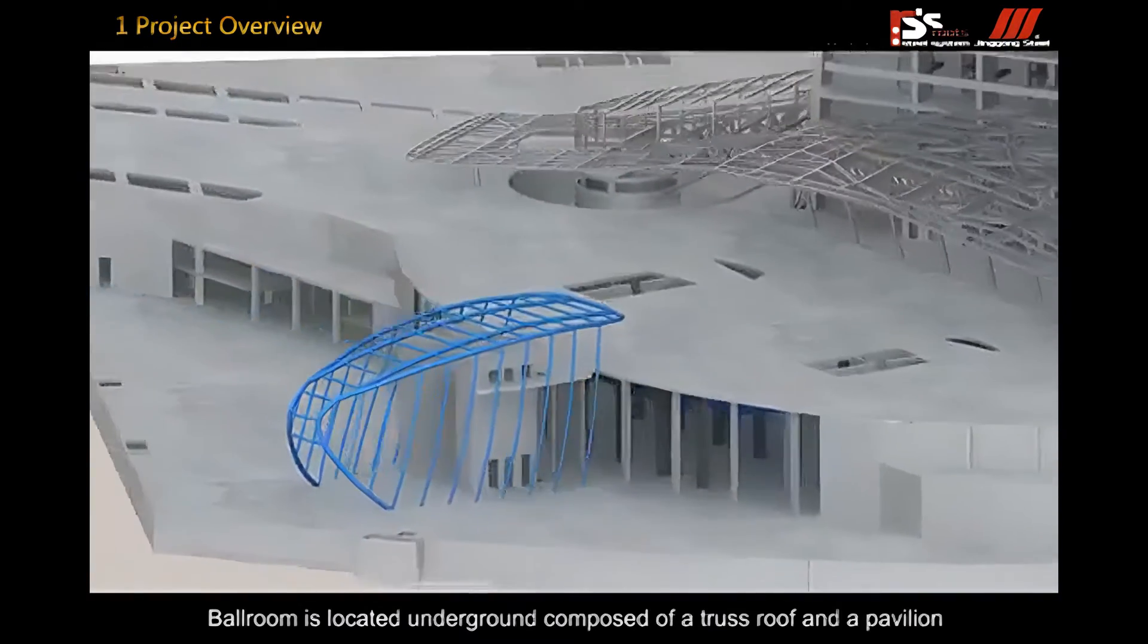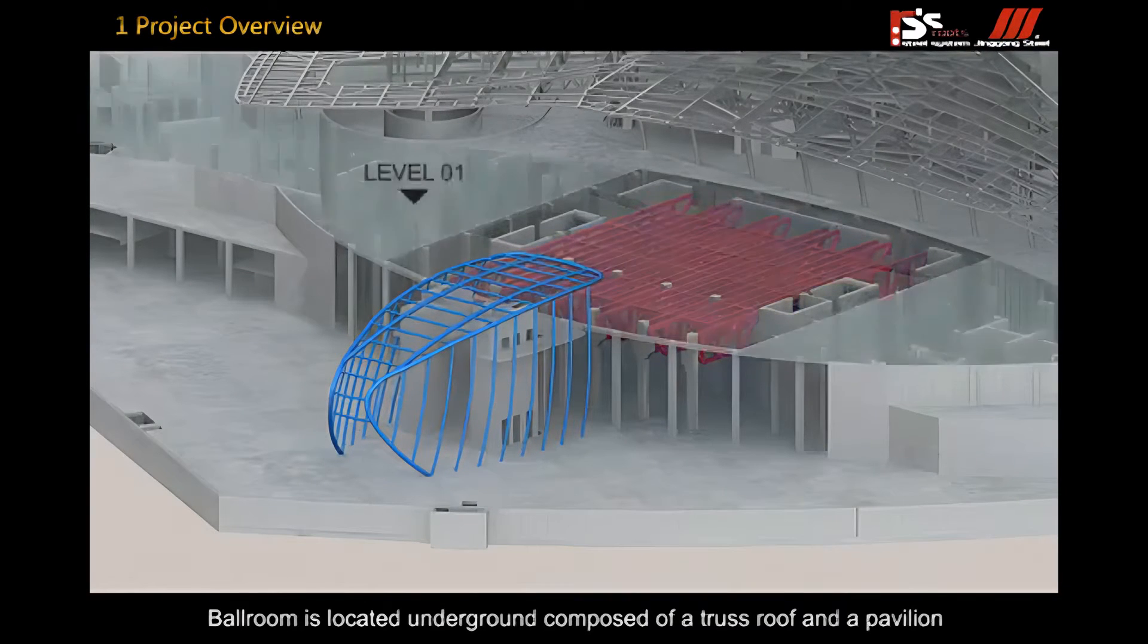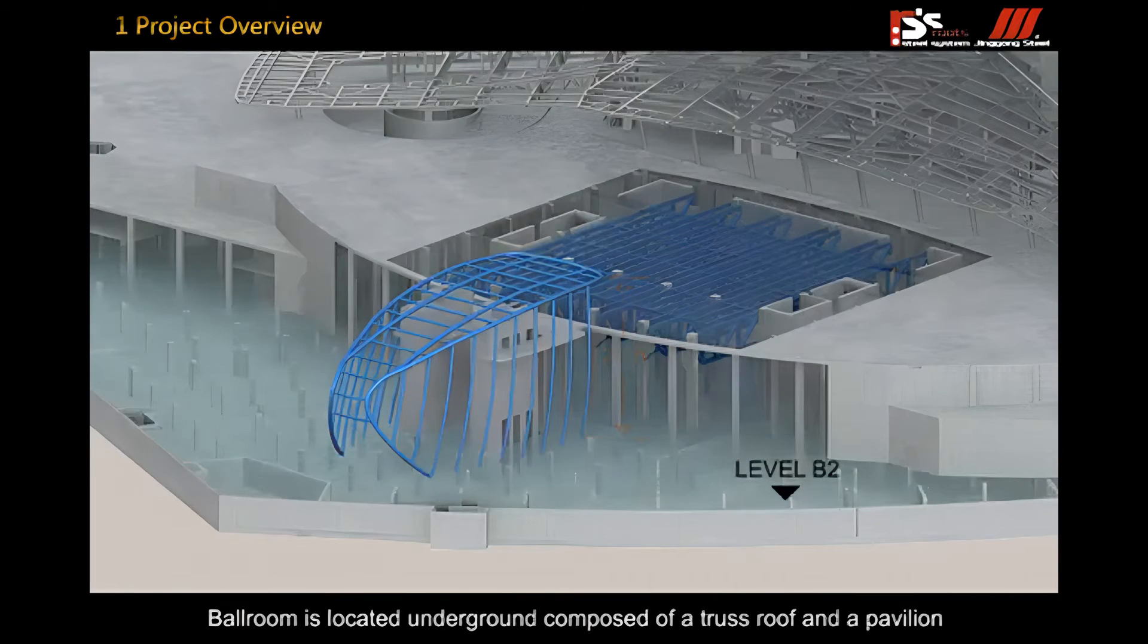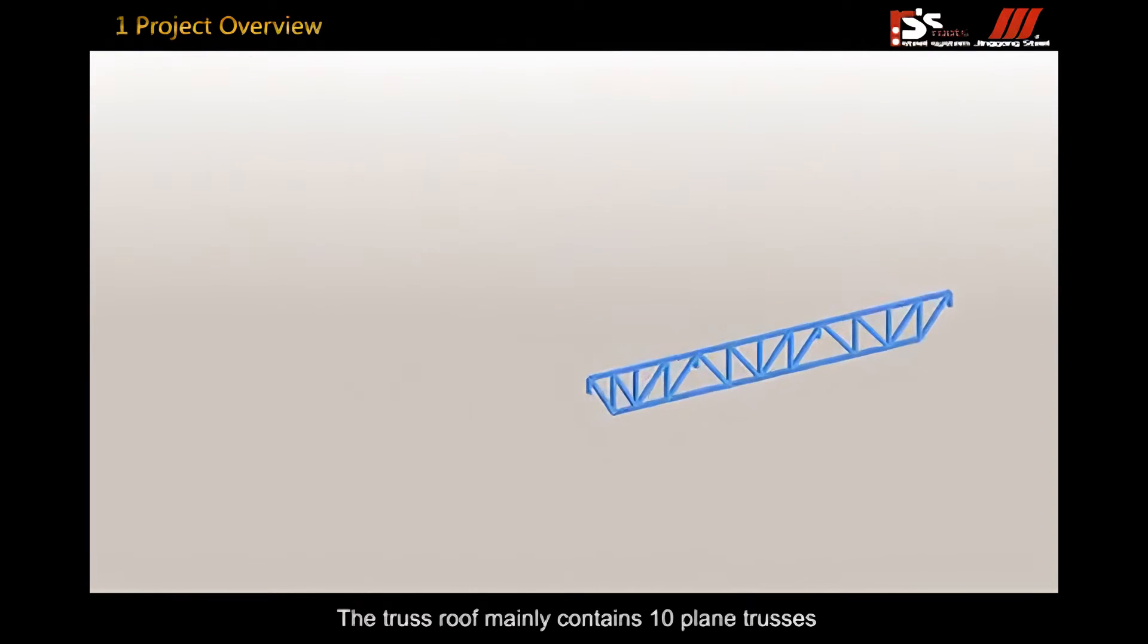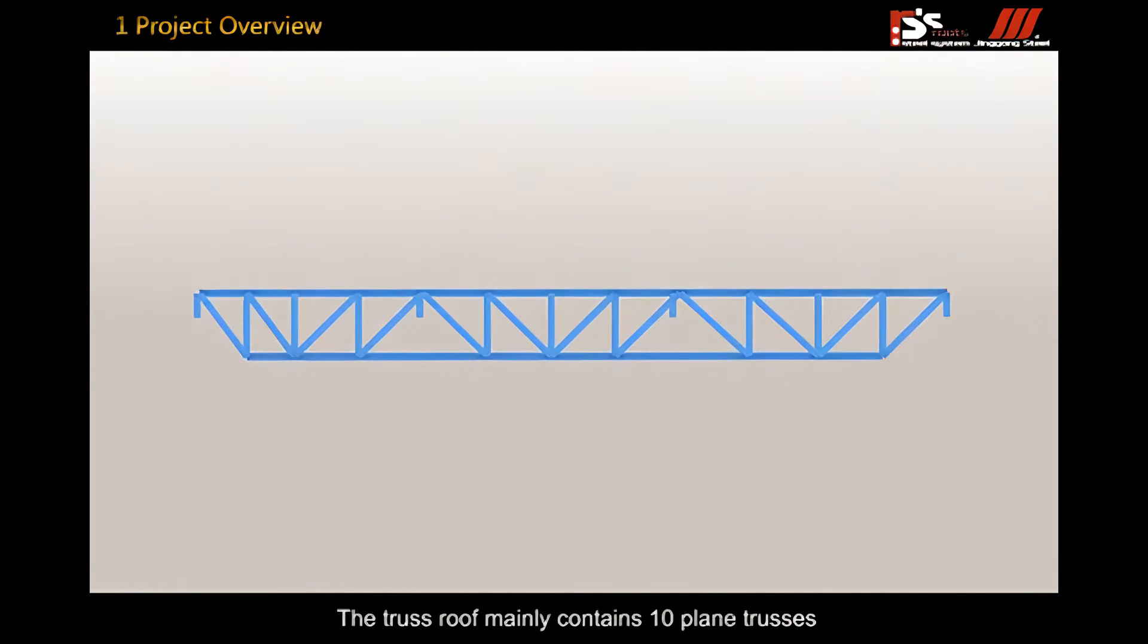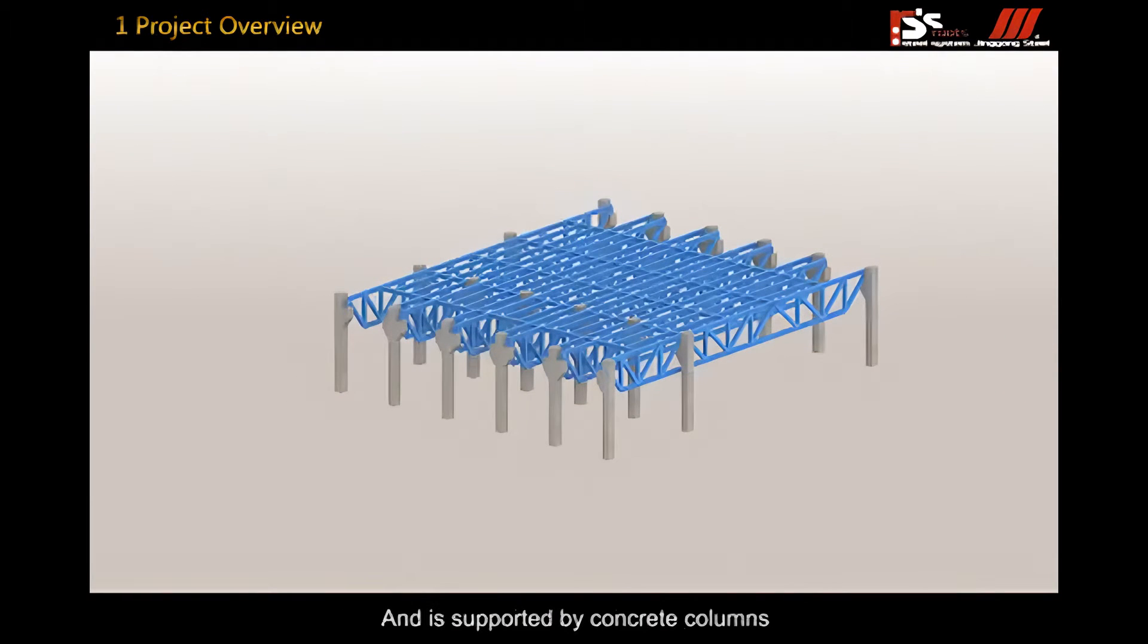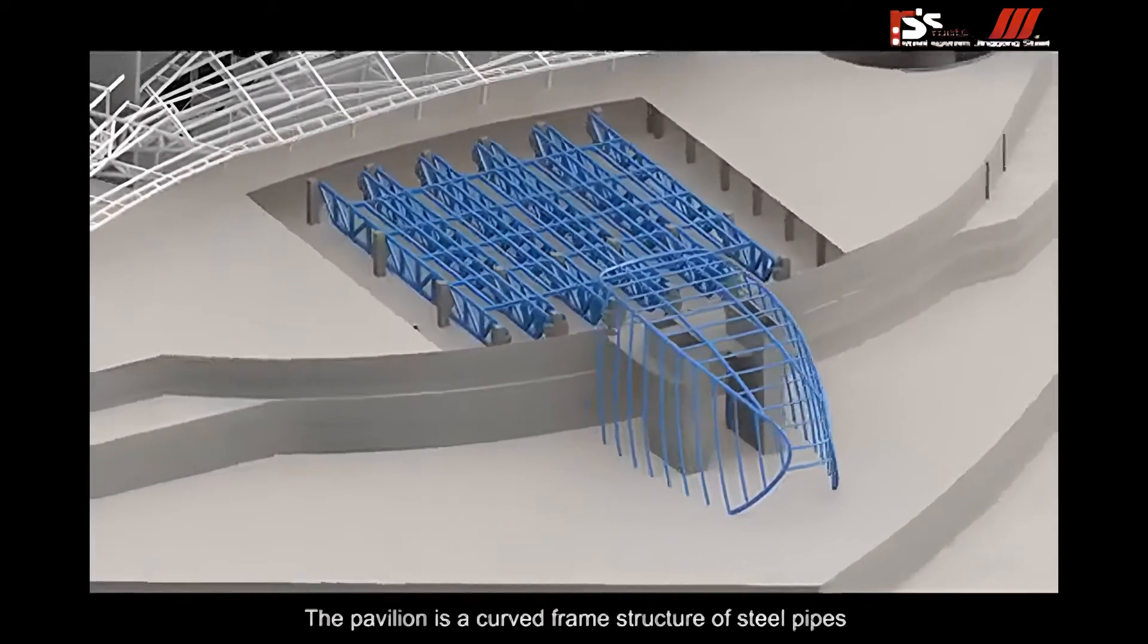Ballroom is located underground, composed of a truss roof and pavilion. The truss roof mainly contains 10 plunge trusses and is supported by concrete columns. The pavilion is a curved frame structure of steel pipes.